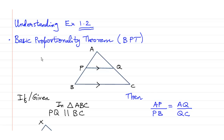Let us understand exercise 1.2. The first theorem is the Basic Proportionality Theorem, which is also called BPT. It is a very important theorem. Let us understand what this theorem says. If there is a triangle ABC and in that triangle PQ is parallel to BC.